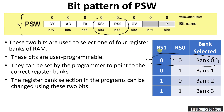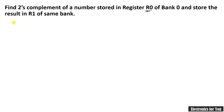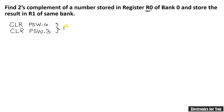To make RS1, which is bit 4 of the PSW register indicated by PSW.4, equal to 0, we will use the CLR instruction: CLR PSW.4. It will make the fourth bit 0. Similarly, we require the third bit also 0, so we use CLR PSW.3. These two instructions select register bank 0.